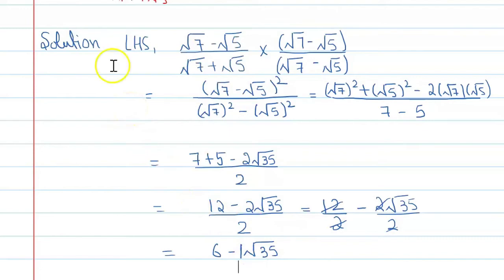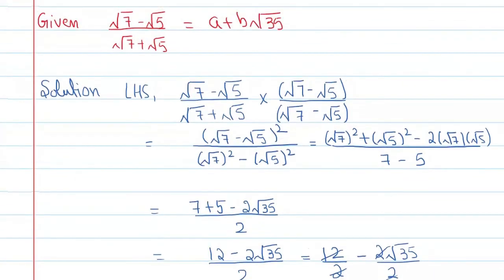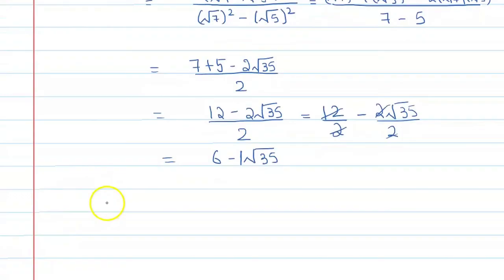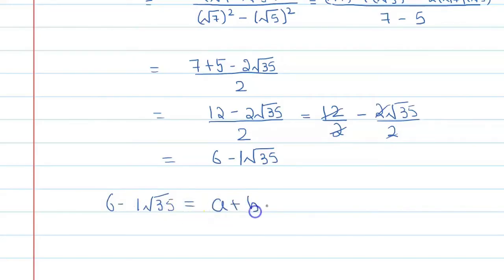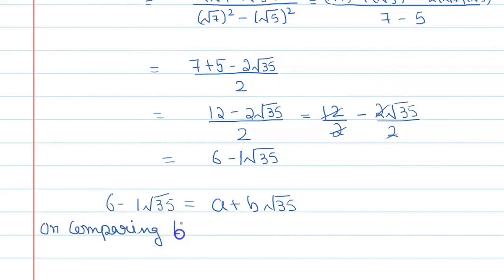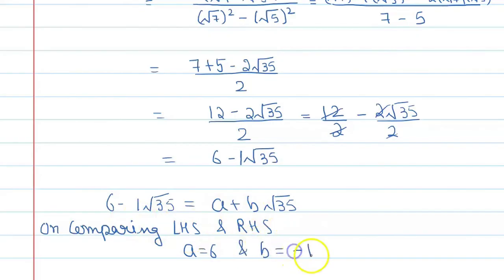Now compare it with the right hand side, which is a + b√35. So we have 6 - 1·√35 = a + b√35. On comparing left hand side and right hand side, we can say a is equal to 6 and b is equal to -1.